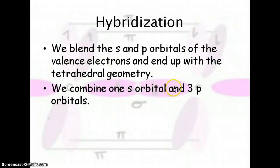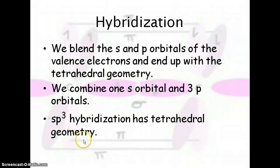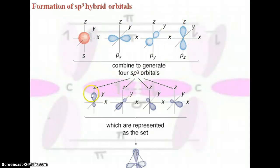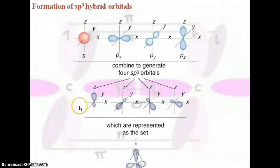When we blend s and p orbitals, we end up with a tetrahedral geometry. If we take one s and three p orbitals, we get sp3 hybridization with tetrahedral geometry. Thinking about the CH4 example: you have an s orbital and three p orbitals, and they all combine to form these hybridized sp3 orbitals. There are four of them, and they combine to make the tetrahedral shape associated with CH4.